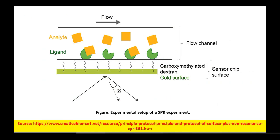Over the gold surface, carboxymethylated dextran or carboxylated dextran can be immobilized, and then the ligand is immobilized over there. We allow the analyte to pass through; if there is affinity for the ligand by these analytes, they will attach onto the ligand surface. After analysis is completed, you can flush the system with washing buffer so these sites will be regenerated.